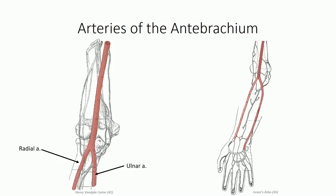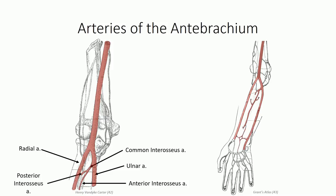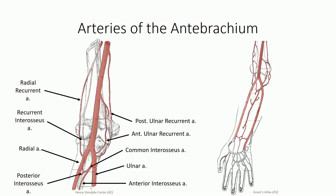Just distal to the split, the ulnar artery supplies an additional important branch, the common interosseous artery, which further branches to form the anterior and posterior interosseous arteries. The anterior branch supplies the deepest structures in the anterior compartment, while the posterior branch courses through an opening between the radius and ulna just proximal to the interosseous membrane to supply the posterior compartment of the forearm. Also note the location of the anterior and posterior ulnar recurrent and the radial recurrent and recurrent interosseous branches that anastomose with the collateral branches discussed in the previous lesson.